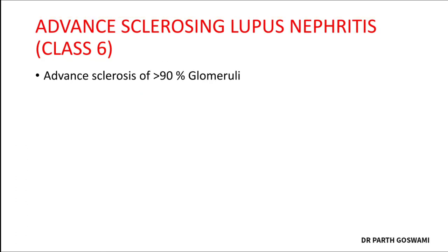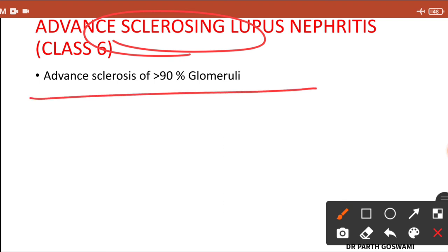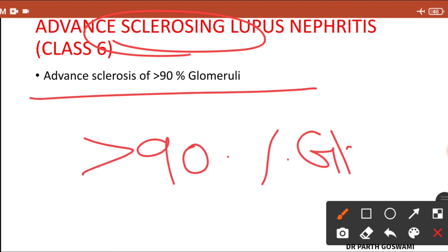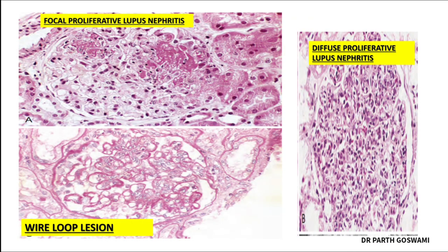Class 6 is advanced sclerosing lupus nephritis. The name itself suggests marked sclerosis in greater than 90 percent of glomeruli — it represents end-stage disease with marked sclerosis of the glomeruli.